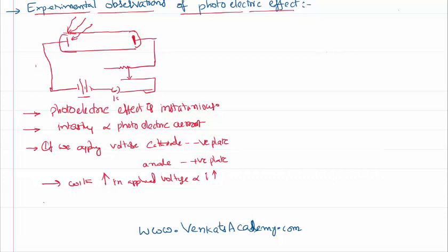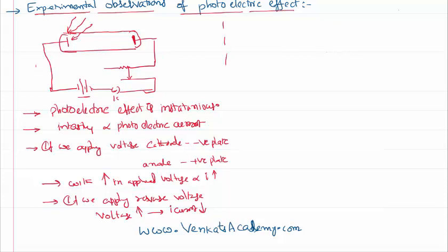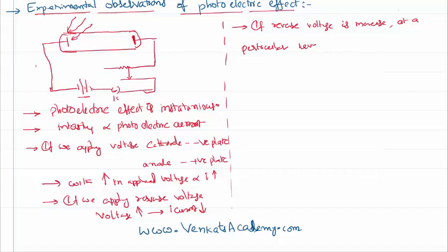It is further noticed that if we apply a reverse voltage — connecting the positive plate to the cathode and the negative plate to the anode — at a particular reverse voltage the photoelectric current becomes zero. That particular reverse voltage is called the stopping potential. The reverse voltage at which the photoelectric current becomes zero is called stopping potential.